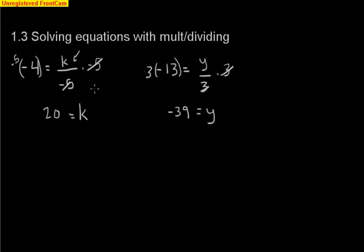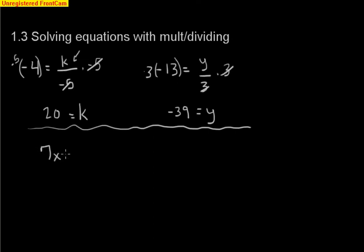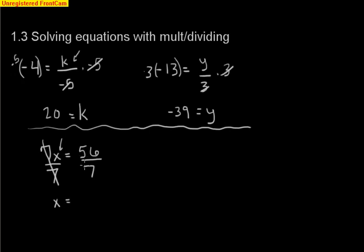A different type is where we have to divide on both sides. For example, 7x is equal to 56. We're solving for x — what's happening to x? It's being multiplied by 7. The inverse operation is to divide by 7. So 7 divided by 7 is 1, and we're left with x. Then 56 divided by 7 gives us 8.